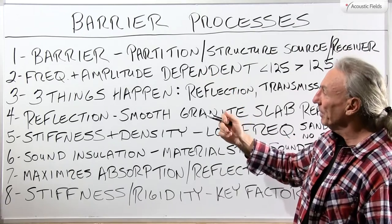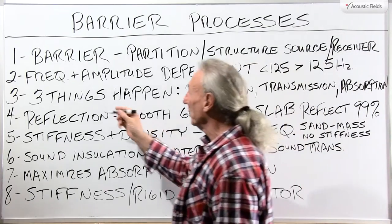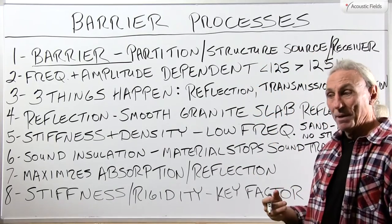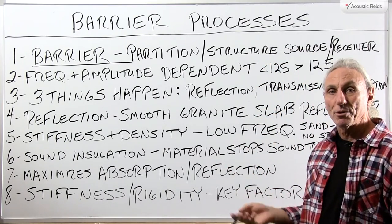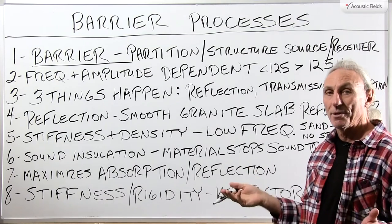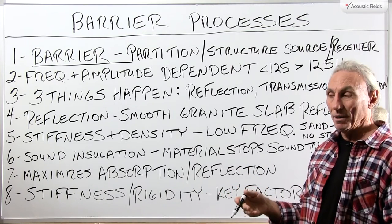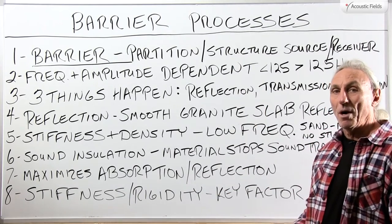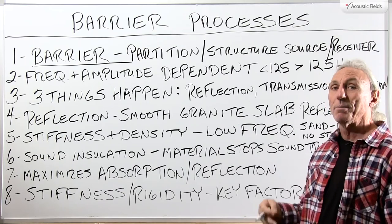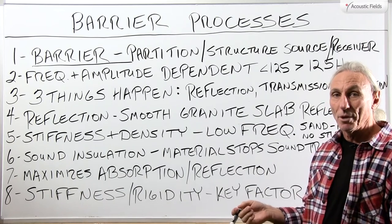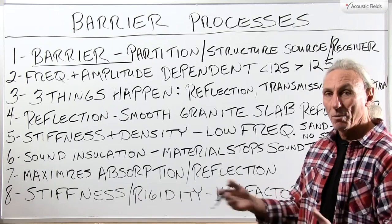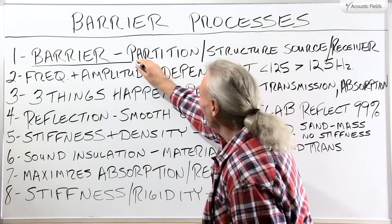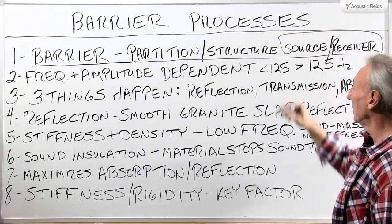Let's start with the definition. What is a barrier? A barrier is a partition that's between us and the noise source. It can be anything — the noise source can be anything. It can be someone playing their stereo loud and you're in the next apartment, so the barrier is the existing wall. Now it may not be a very good barrier because you're not very happy with the noise level. It is a structure that we place between a source and a receiver.